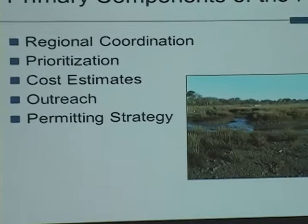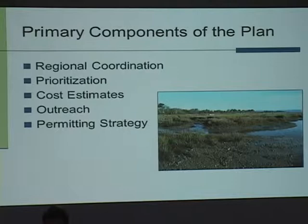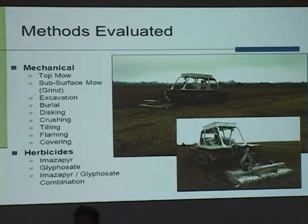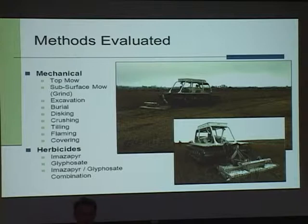The primary components of the plan I'm going to discuss are: reprioritizing through time where we should focus our efforts and with what methods, cost estimates for controlling Spartina, an outreach program developed through this plan, and a permitting strategy. In the plan itself, we consider a large variety of both mechanical and chemical herbicide treatments, leaving those in the plan as tools that can be selected through time as local entities coordinate and learn more about the effectiveness and cost of different methods.